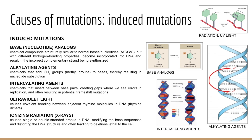Alkylating agents are chemicals that add an alkyl group — like CH3 (methyl) or CH2CH3 (ethyl) — to amino groups in nucleotides. As with base analogs, additions of alkyl groups skew or alter base pairing due to nucleotide substitutions, and mutations may result.